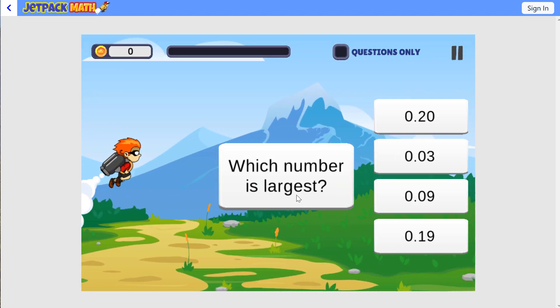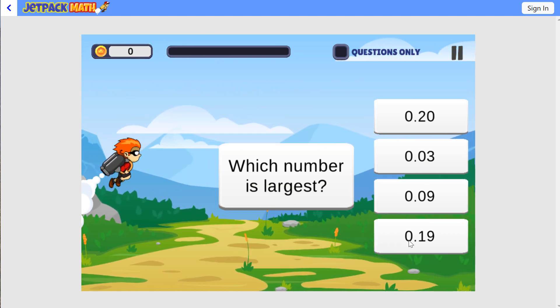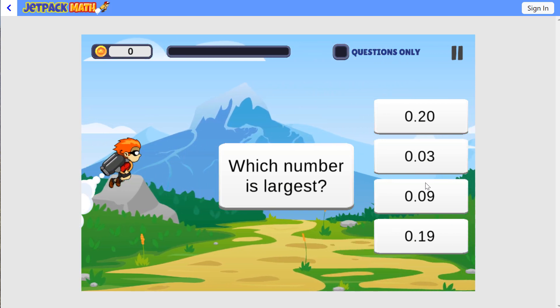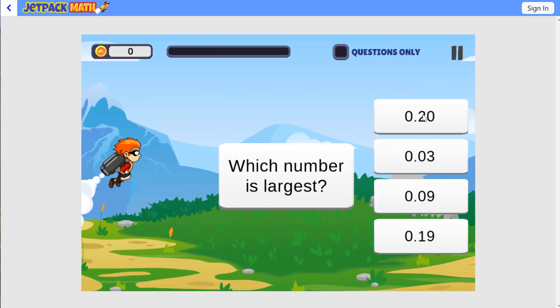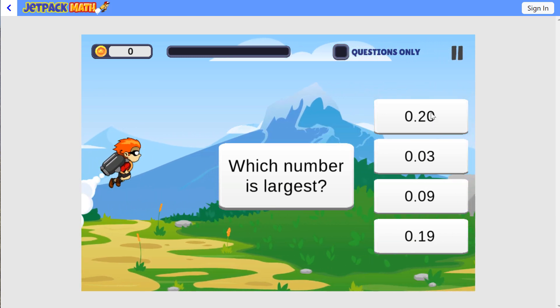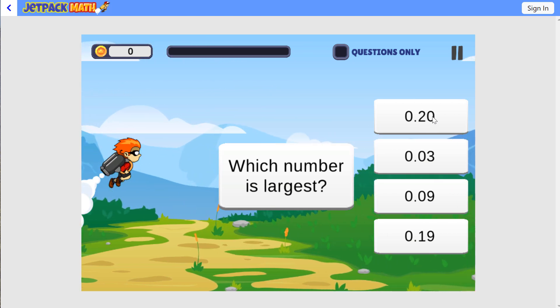Which number is largest? If we look at these numbers, they all begin with zero, so we have to look at our tenths. When we look at the tenths, we see a two, a zero, a zero, and a one. The two is the largest. We don't even have to look at the hundredths. Just look at the tenths. This is our answer.